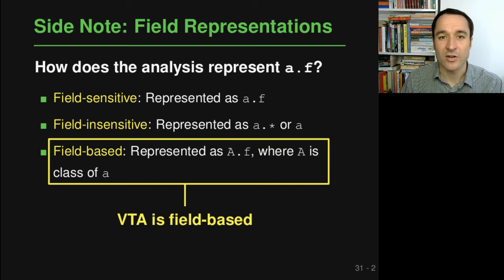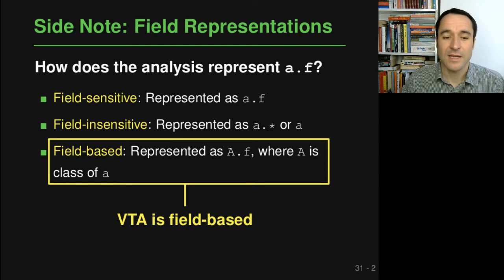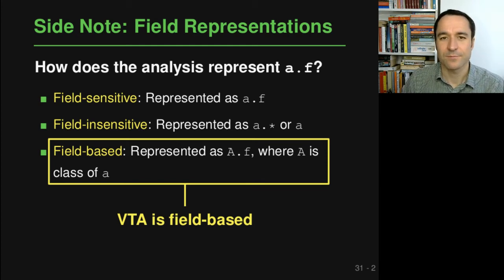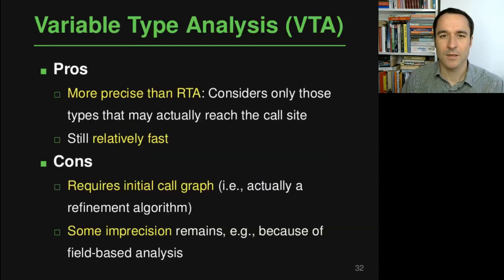VTA is field-based, so it collapses all different instances of a class A with respect to a particular field f, allowing it to scale more easily to larger programs.